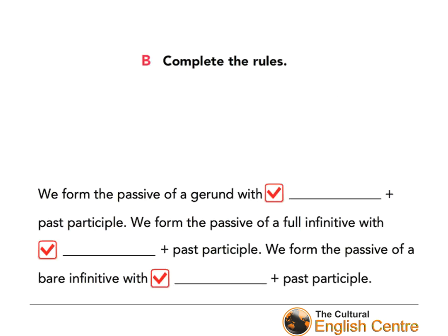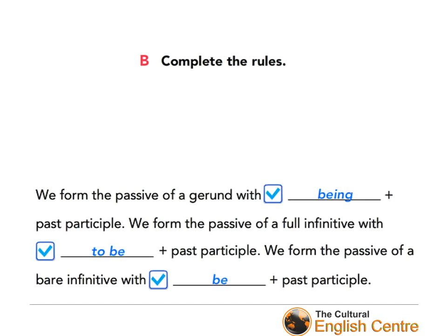One more exercise from the book: complete the rules. We form the passive of a gerund with 'being' plus past participle. We form the passive of a full infinitive with 'to be' plus past participle. And we form the passive of a bare infinitive with 'be' plus past participle.